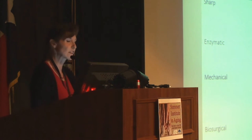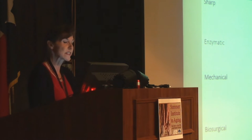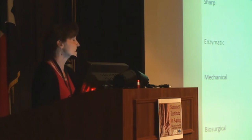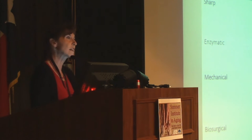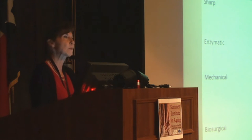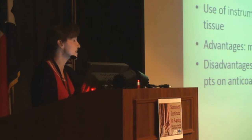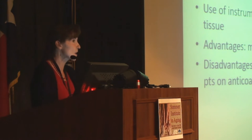This overview gives you a schematic of the different methods of debridement and a description of what each entails with examples. Sharp debridement is exactly what you would think — the use of instruments or devices to remove tissue. A real advantage of sharp debridement is that it is very rapid, efficient, and effective. If I see something I think I can snip and clip out of the wound, I'm going to try to do it.